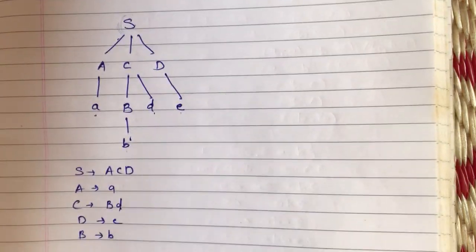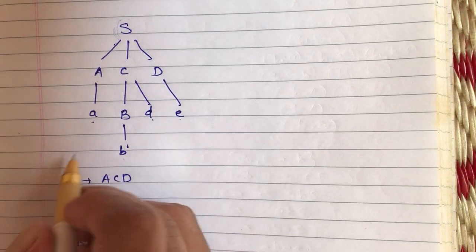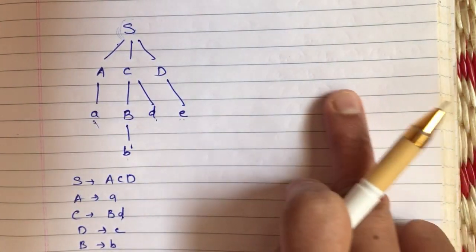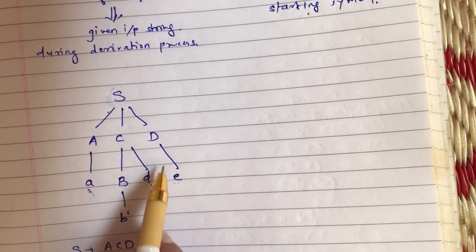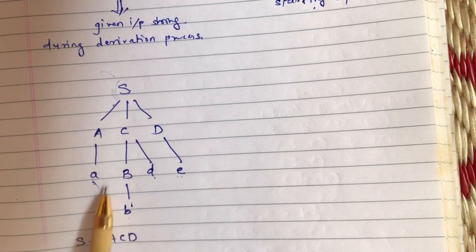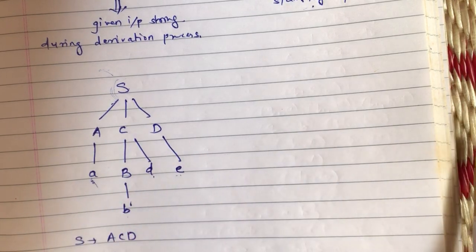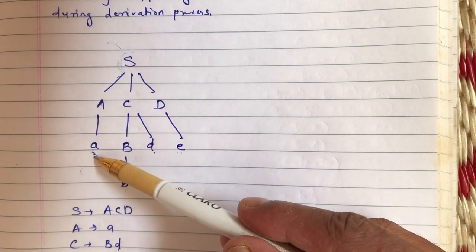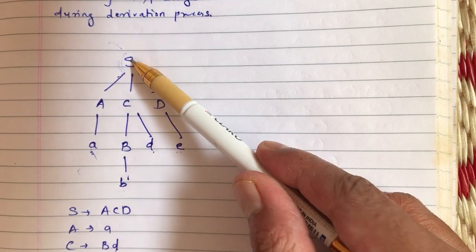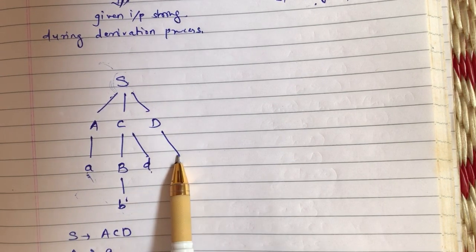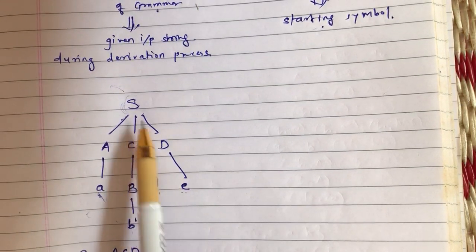For the same grammar, if I draw the parse tree, my approach is to start from the string and reduce up to the starting symbol. We will not draw the tree in reverse — the tree remains the same with the root at the top, interior nodes in the middle, and leaf nodes at the bottom. But the approach indicates that I am starting my processing from the leaf nodes and reaching up to the root node of the tree. Such an approach is called bottom-up parsing, wherein I start from the given input string and try to reduce it to the starting symbol of the grammar.